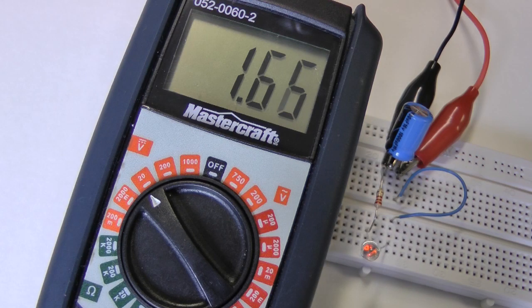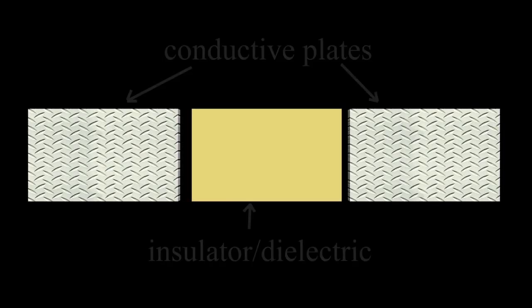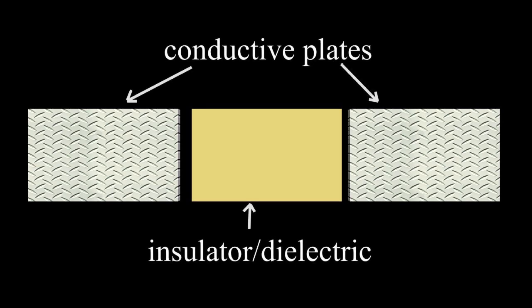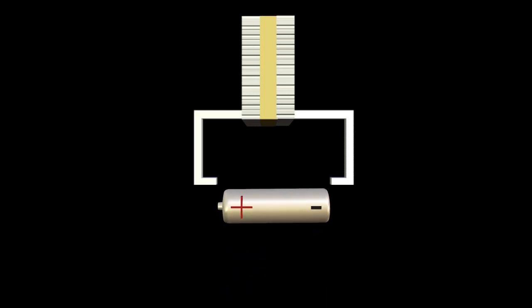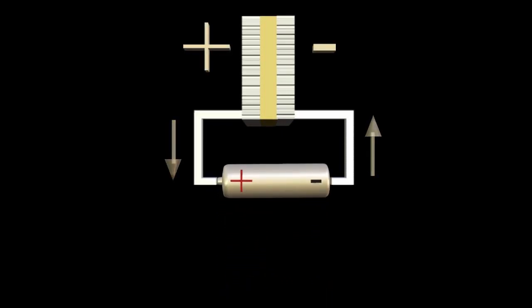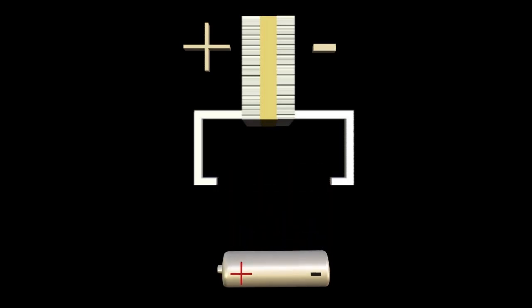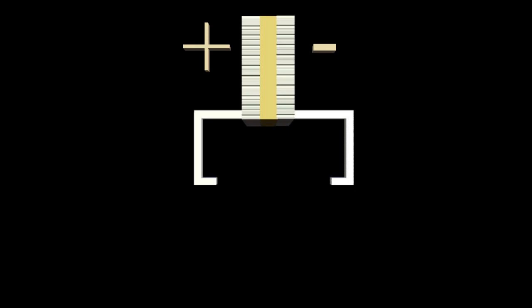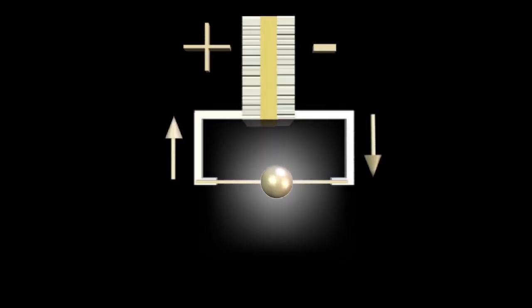Capacitors store energy electrostatically. They basically work like this. There are two conductive plates separated by an insulator or dielectric. The conductive plates are sometimes aluminum. Briefly connecting a battery to the terminals of the plates allows electrons to flow onto one plate and off of the other. Removing the battery traps this imbalance or charge on the plates. Connecting a load like a lamp to the terminals allows the electrons to flow, restoring electrical balance and causing the lamp to glow.